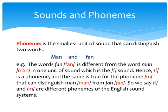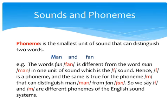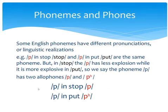A phoneme is the smallest unit of sound that can distinguish two words. So the word 'fan' is different from the word 'man' in one unit of sound — the first sound. This means /f/ is a phoneme, and the same is true for /m/ which can distinguish 'man' from 'fan'. So we say that the first sounds in 'fan' and 'man' are different phonemes of the English sound system.